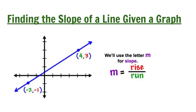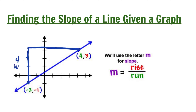To find the slope of a line, we need to identify two points. To determine the slope using rise over run, we draw a triangle using those two points. From negative 2 to negative 1, counting how many units going up — that's 4 units up.